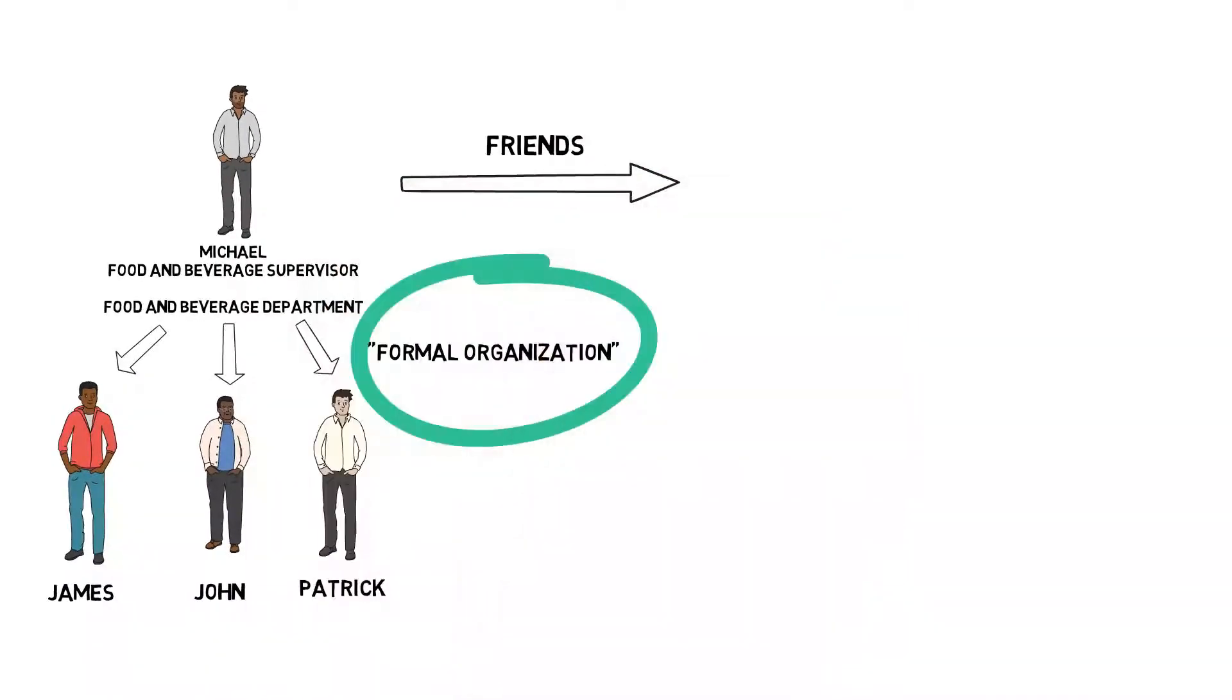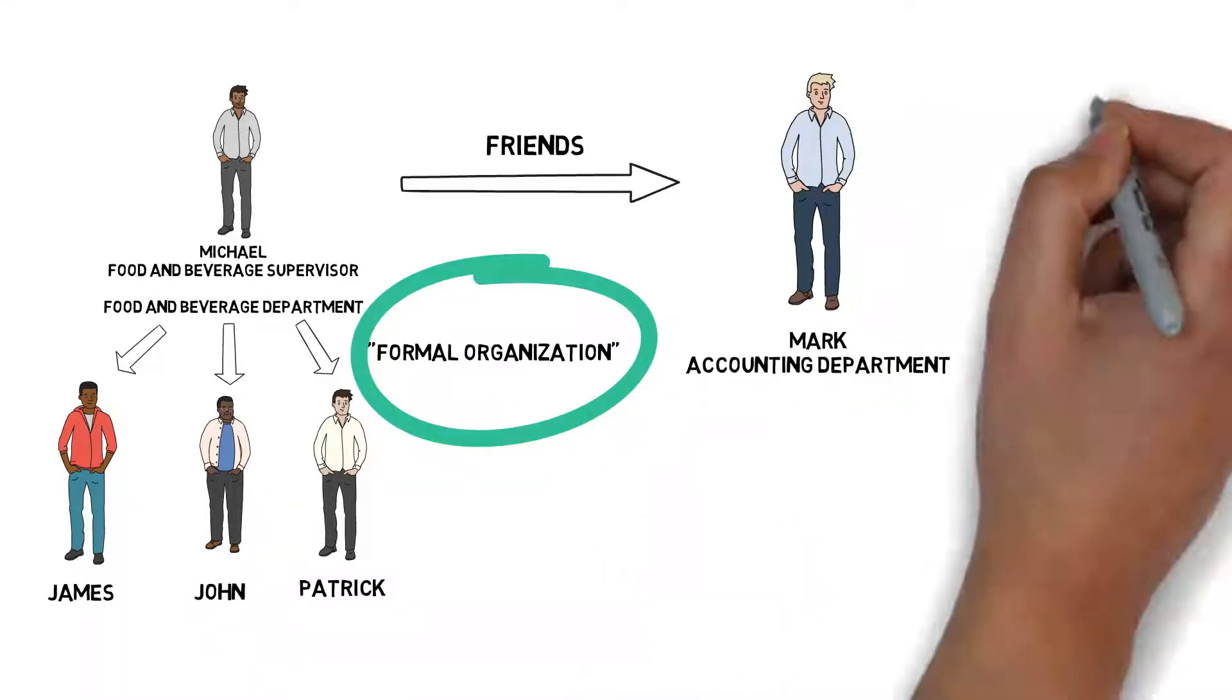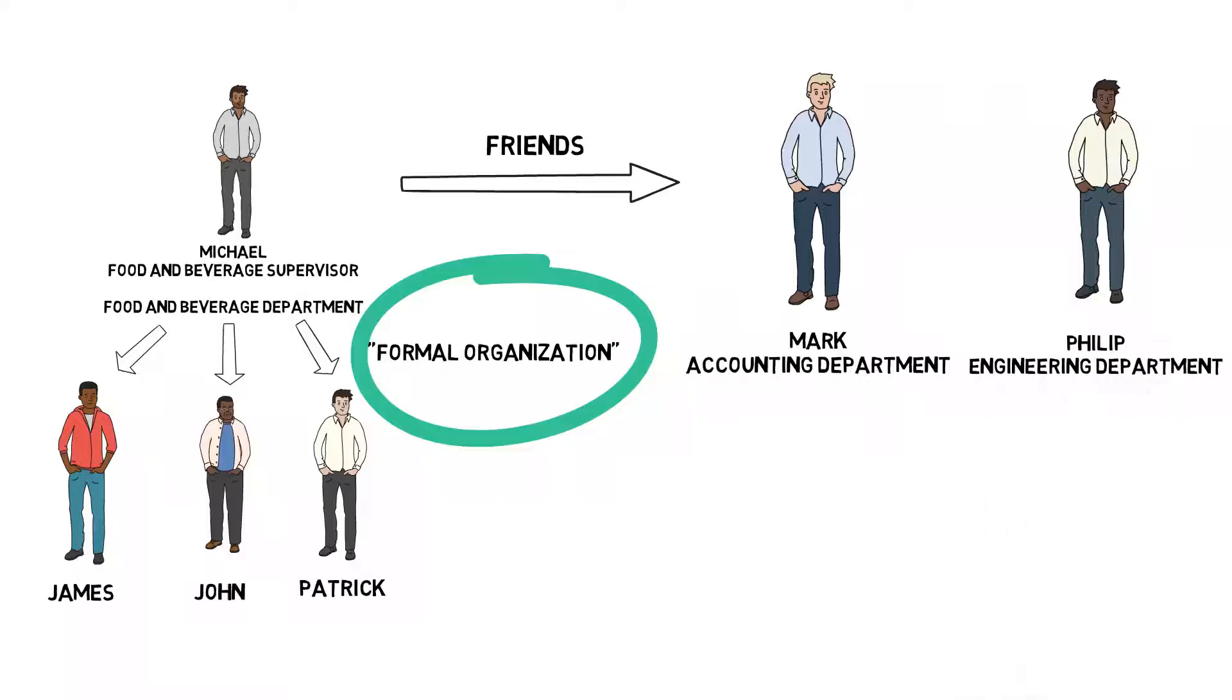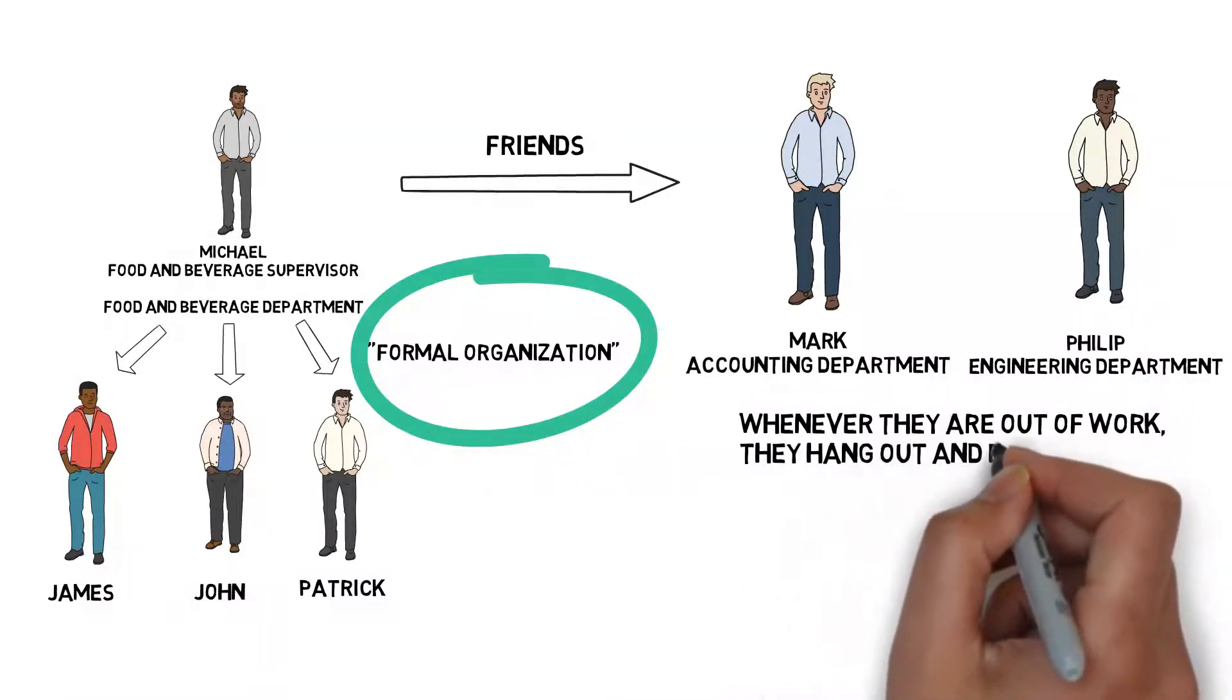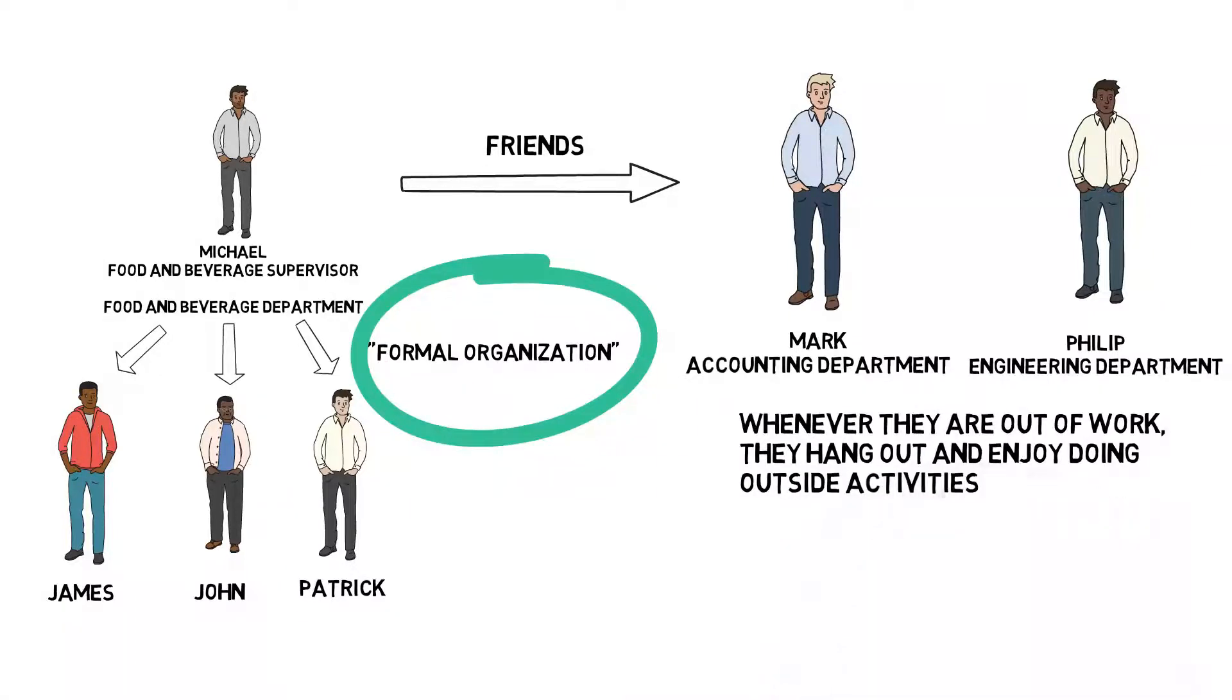Then, Michael has friends with other departments. Mark is in the accounting department and Philip is in the engineering department. Whenever they are out of work, they hang out and enjoy doing outside activities. This is an example of informal organization.